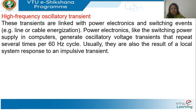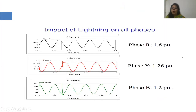High-frequency oscillatory transients are normally caused by power electronic component switching and sometimes by transmission line or cable energizing. These are very local phenomena that die down very quickly.